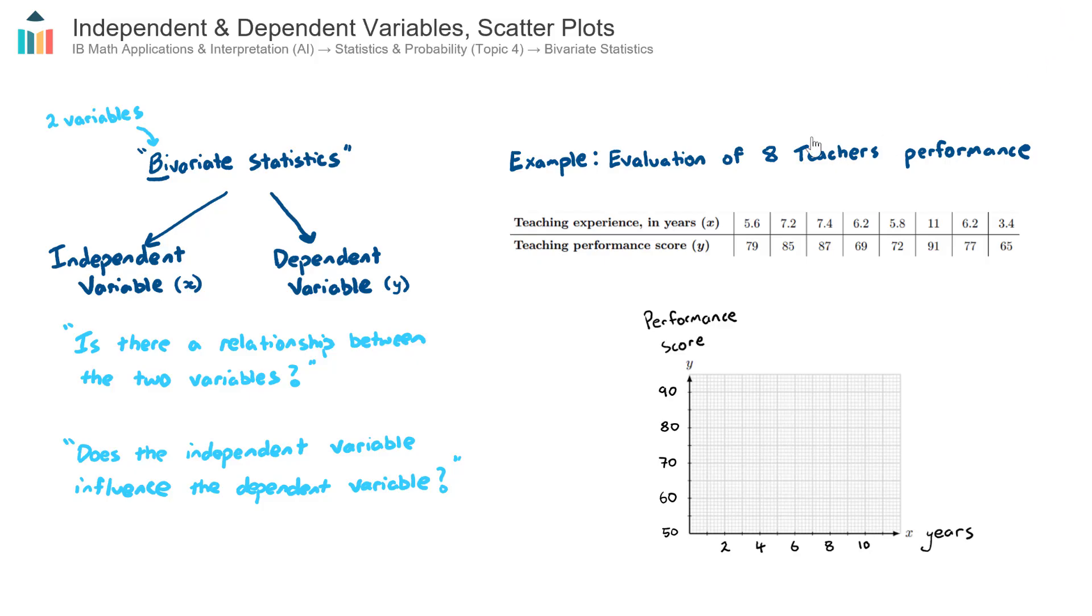Let's have a look at this example here on the right-hand side. I'm going to talk through the two variables here, how to think about them, and then plot these values onto the scatter diagram and see if we can see a relationship or a trend between the two. In this example, we have eight scores of eight teachers who were evaluated by some sort of independent panel, like a panel of principals or independent education experts. We have the teachers experience in years. For example, this first teacher had been teaching for 5.6 years and their associated teacher performance score. In this case, this first teacher had a score of 79 and these scores are out of 100.